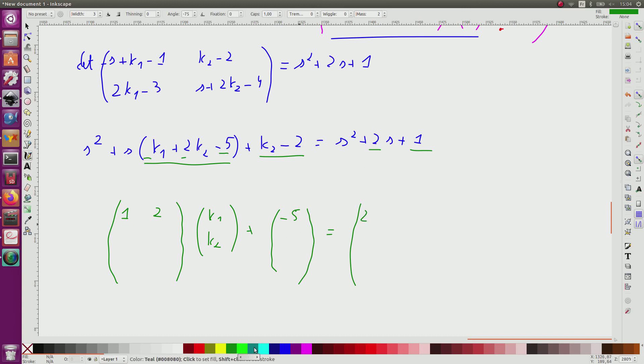And now for the other one, I will have 0, 1 due to the 1 here, minus 2 due to this, and it will be equal to 1.